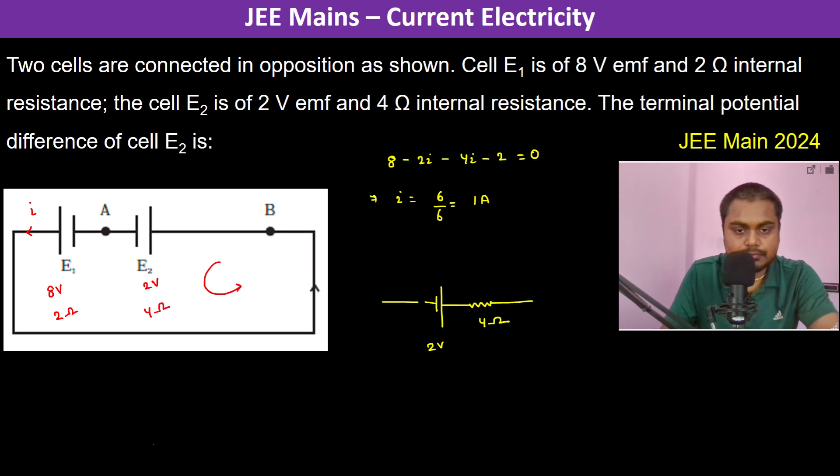We have to find out the terminal potential difference. If you see, the current actually flows in the left direction and the current is 1 ampere. So here the potential decreases by minus 4 volts.